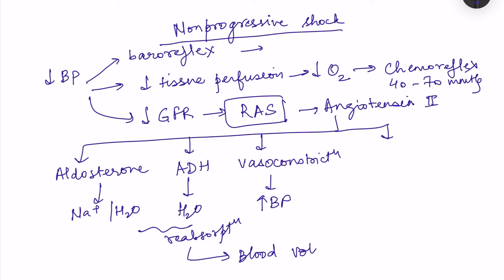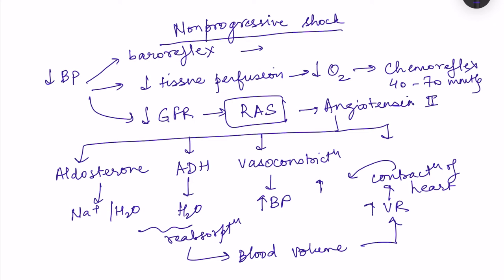When blood volume is restored, there is an increase in venous return and increased contraction of the heart, which increases cardiac output and maintains blood pressure. Apart from these, there are certain intermediate mechanisms. This renin-angiotensin system is a long-term mechanism studied in blood pressure regulation, but intermediate mechanisms also exist.